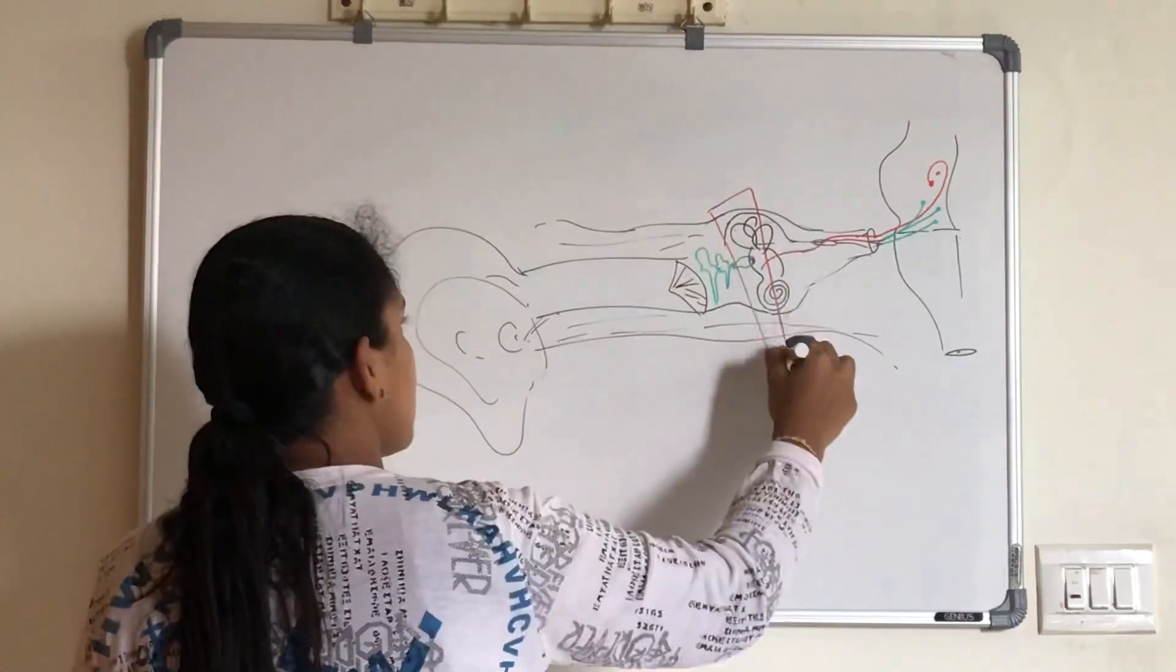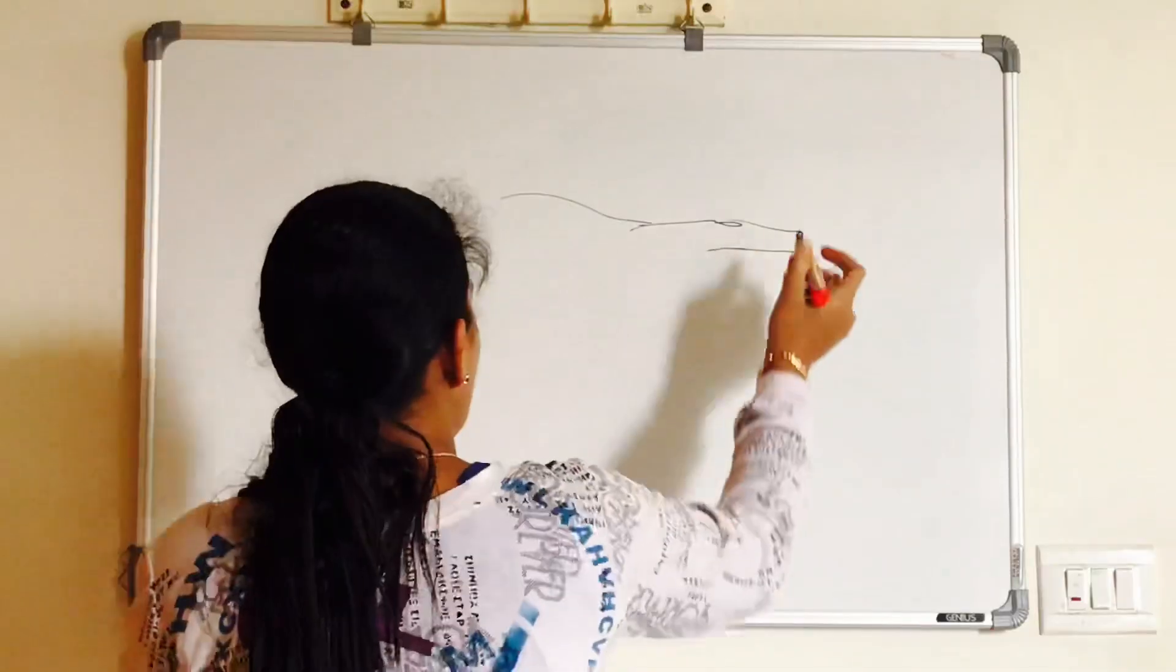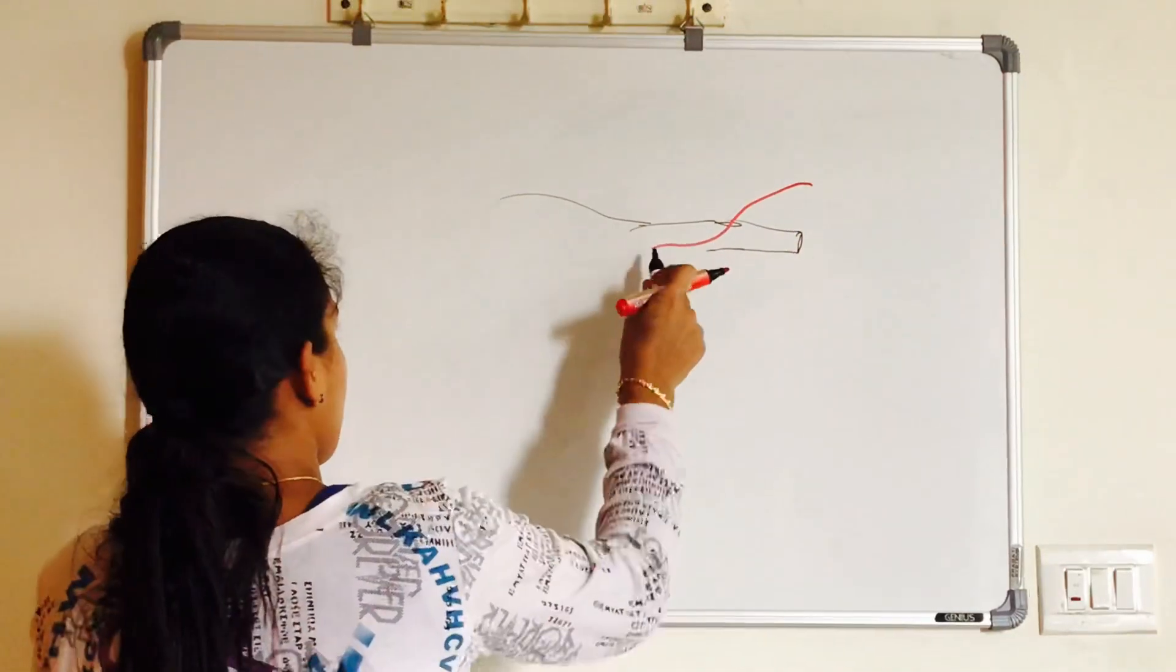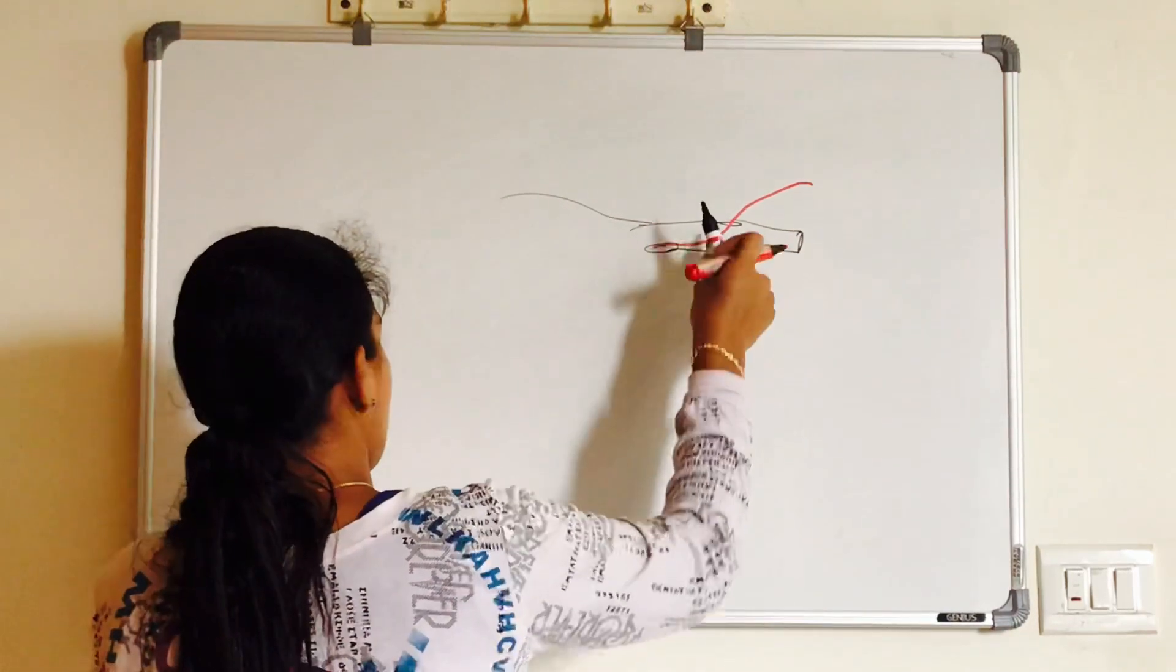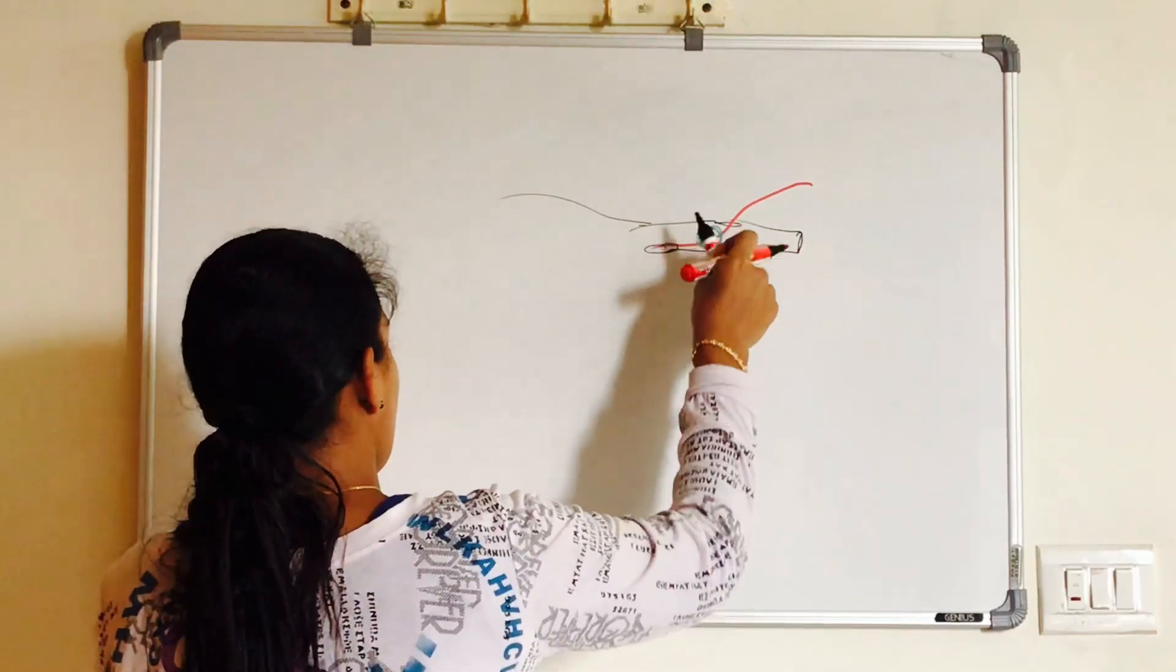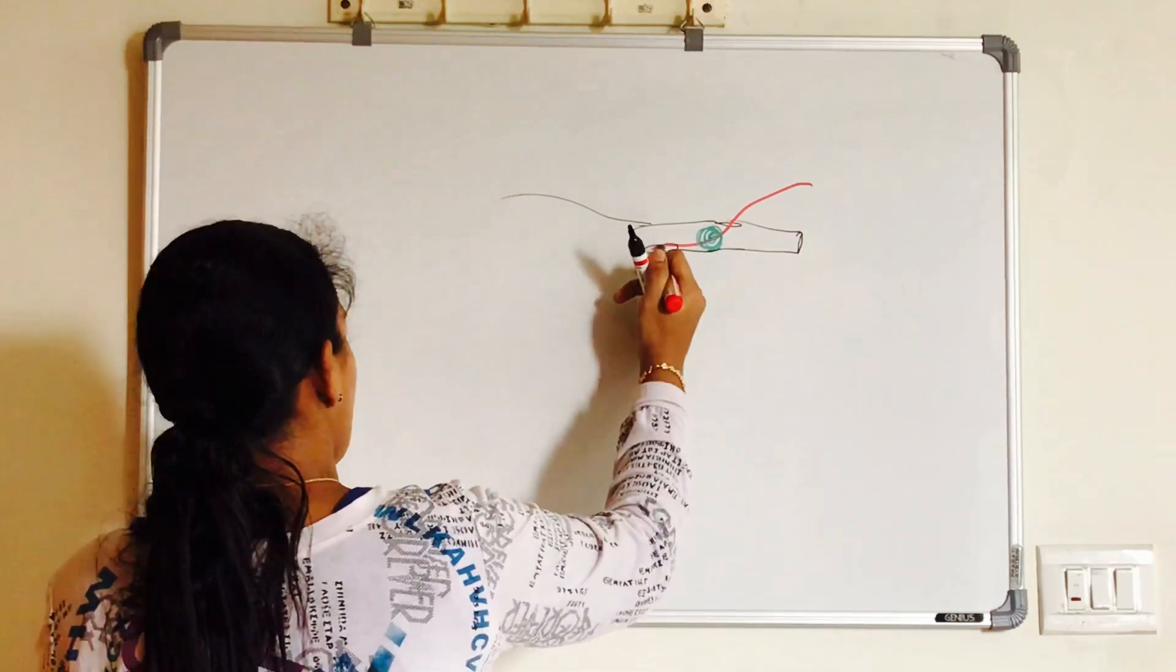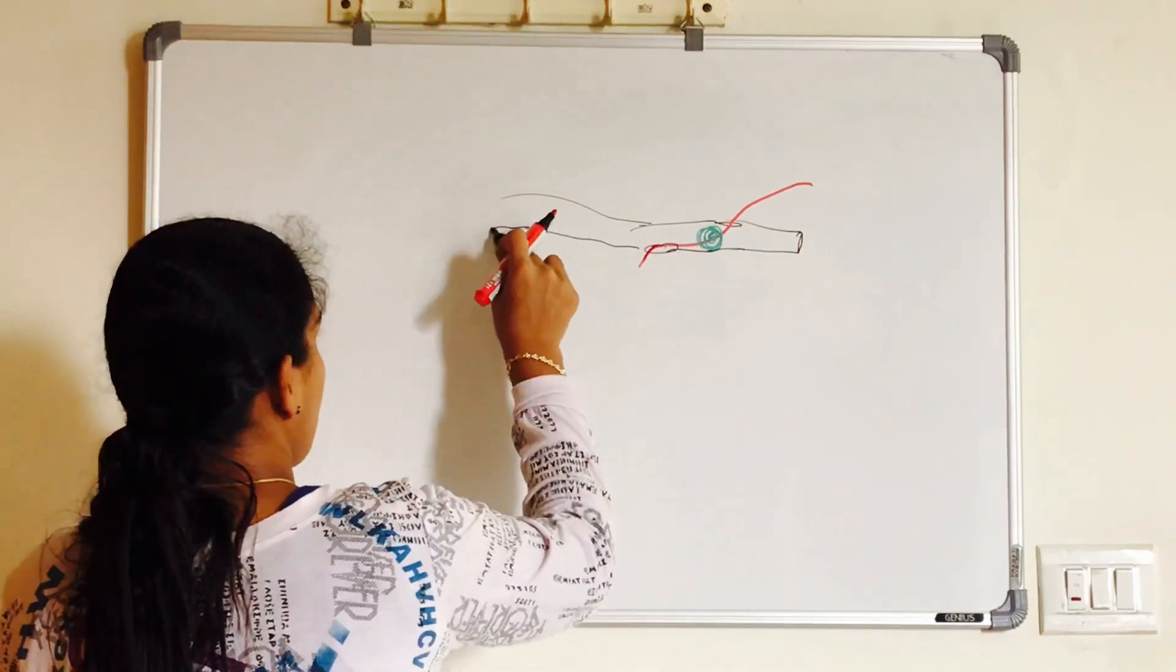Now let's talk about the facial nerve in the medial wall of the middle ear cavity. The nerve enters the internal acoustic meatus after coming out of inner ear. In the inner ear, it takes the first turn called external genu and you have a ganglion over there called geniculate ganglion.